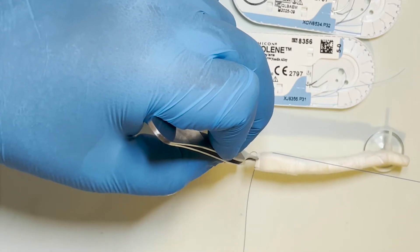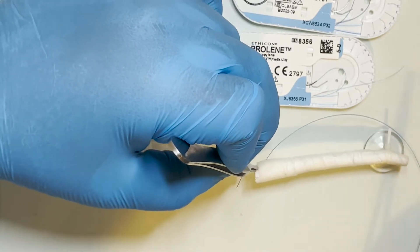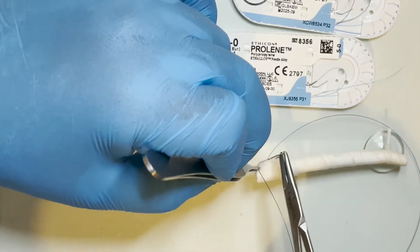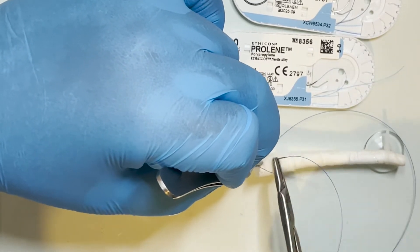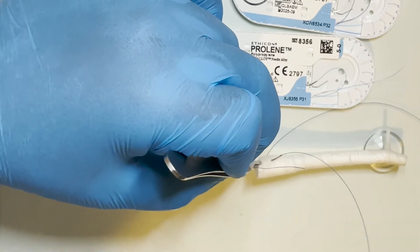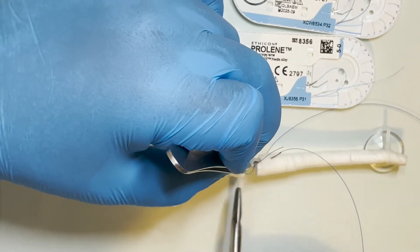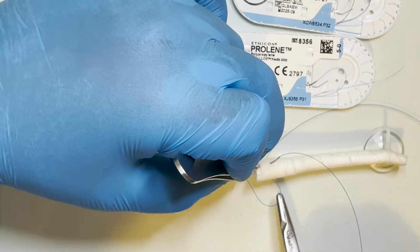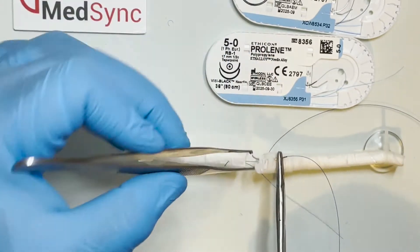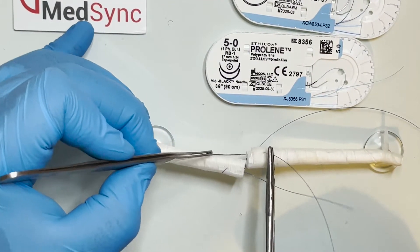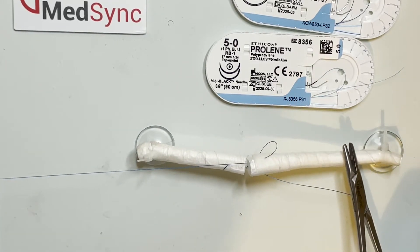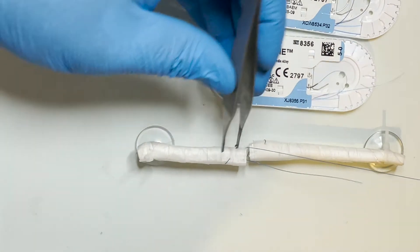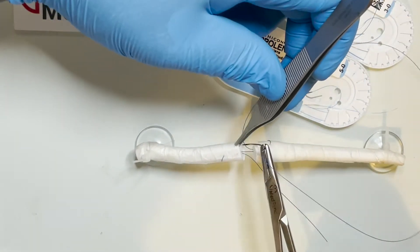An axial pass is again taken, this time starting proximal to the site of tendon division, across the repair site and into the other half of the divided tendon axially.